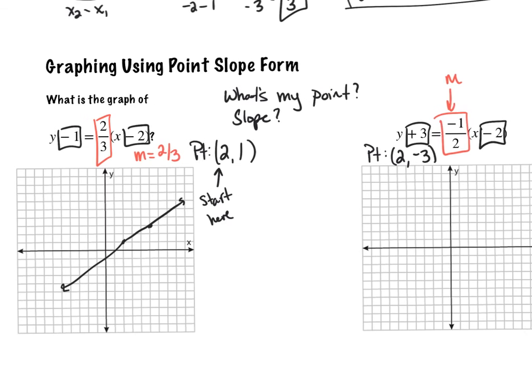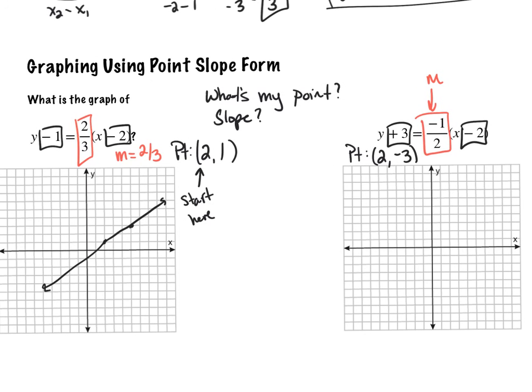Right, so if I look at this and graph, I'm going to start here still. So I plot that point at 2, negative 3, I have a point. And if my slope is negative 1 half, you're down 1 and over 2 to the right, connecting those points. And then I have the graph of that.